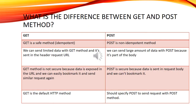What is the difference between GET and POST method? GET is a safe, idempotent method. POST is a non-idempotent method. We can send limited data with the GET method and it is sent in the header request URL. We can send a large amount of data with POST because it is part of the body.